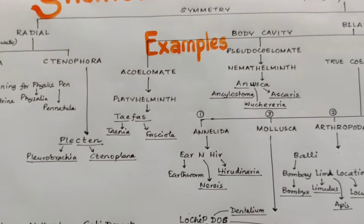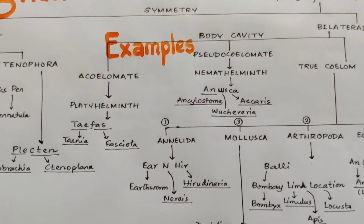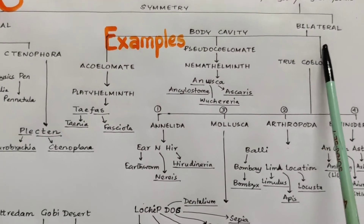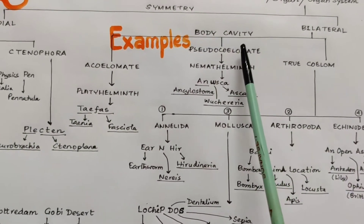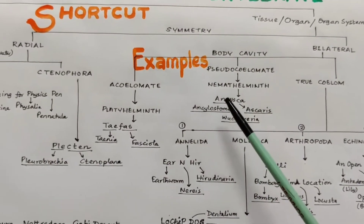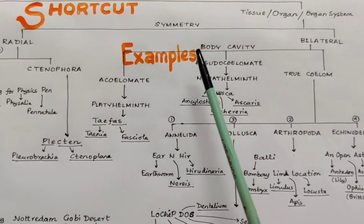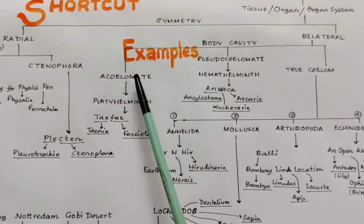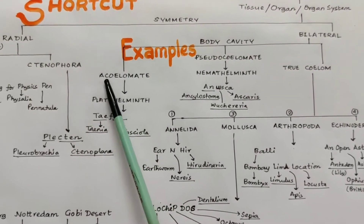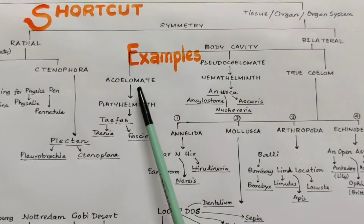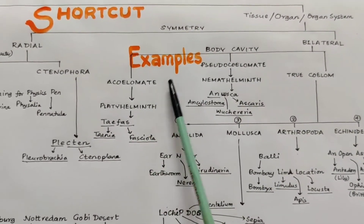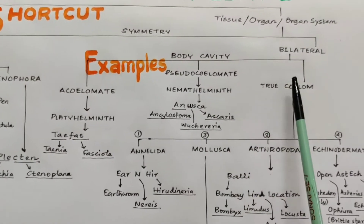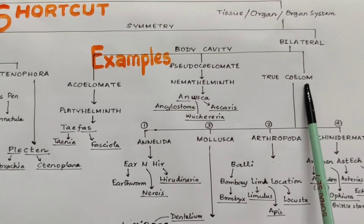Now coming to bilateral symmetry. The bilaterally symmetrical organisms are divided into three categories depending upon their body cavity. That is Acoelomate — having no body cavity; Pseudocoelomate — having false body cavity; and true coelomate or eucoelomate.